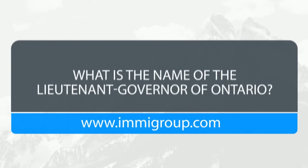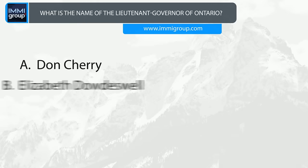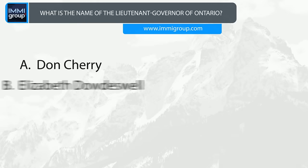What is the name of the Lieutenant Governor of Ontario? A. Don Cherry. B. Elizabeth Dowdeswell. C. David C. Onley. D. Belinda Stronach. Answer: David C. Onley.